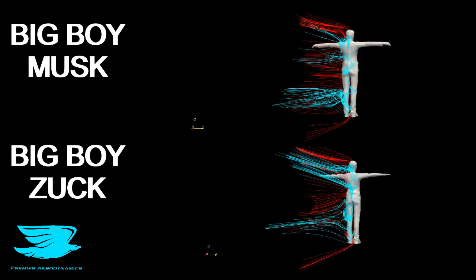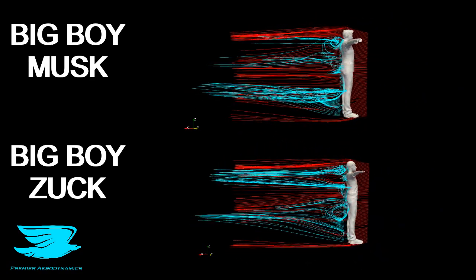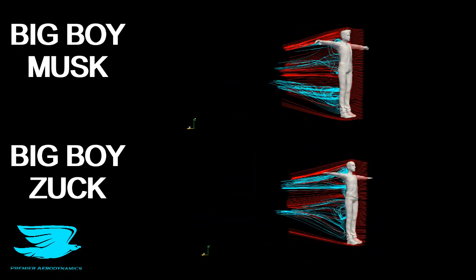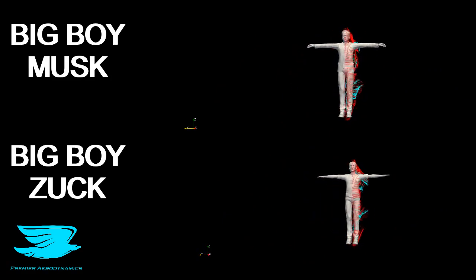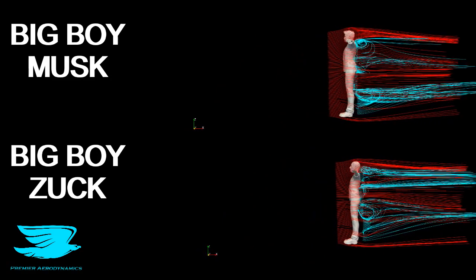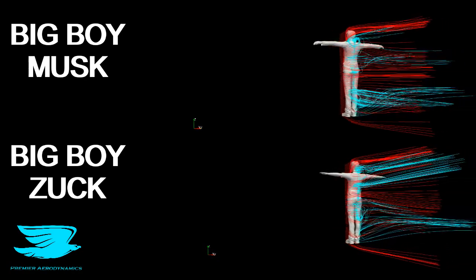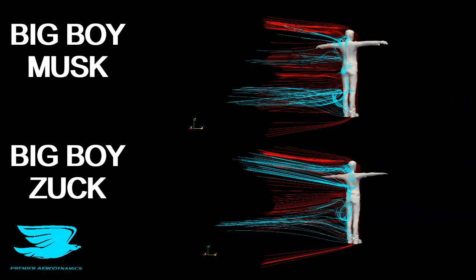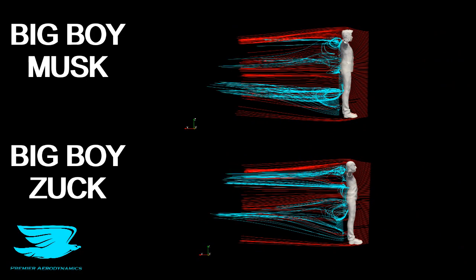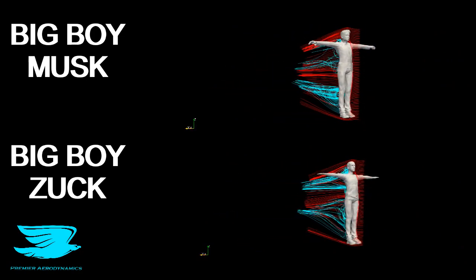If you move up a little bit further to the hip region, the chaoticness is a little bit more for Zuck than Musk. Then when we go to the head region, the vortex that comes around is more standing off of Musk's shoulders, whereas for Zuckerberg it's more around his neck and head.